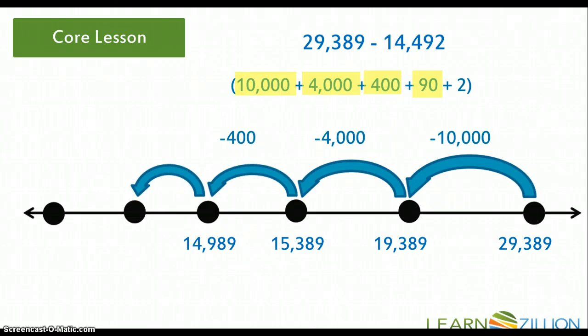Next, I'm going to be taking a look at that 90 in my expanded form. And I'm going to subtract 90 from 14,989 and come up with a difference of 14,899. And finally, that little two at the end in the ones place, I am subtracting two from 14,899 with a final difference of 14,897.